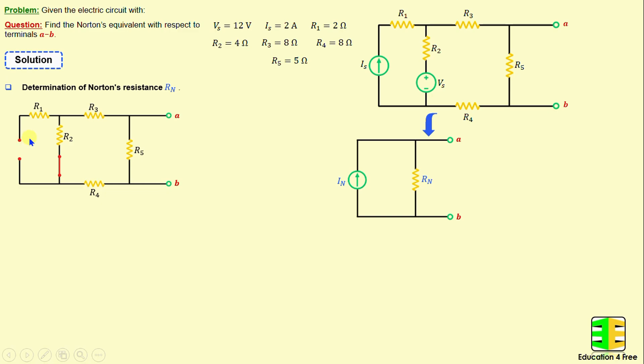The Norton's resistance represents the equivalent resistance between terminals A and B. That means RN is equal to the series combination of R2, R3, and R4 connected in parallel with R5. Therefore, RN can be calculated using the following formula: R2 plus R3 plus R4 times R5, over R2 plus R3 plus R4 plus R5. And if we replace the resistors with their numerical values, we obtain RN is equal to 4 ohms.